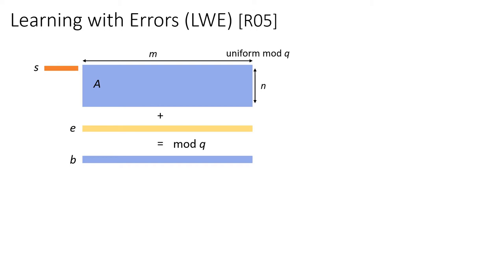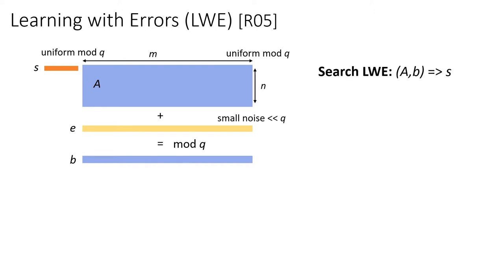We have this random matrix A, and it gets multiplied by a secret vector S, which is also uniform modular Q. To the product S times A, we add a noise vector E — a vector of iid elements sampled from a noise distribution supported only over elements much smaller than Q in absolute value. This S·A + E mod Q is denoted by B, the outcome of this system of approximate linear equations. The search version of LWE is the problem of giving A and B to find S.